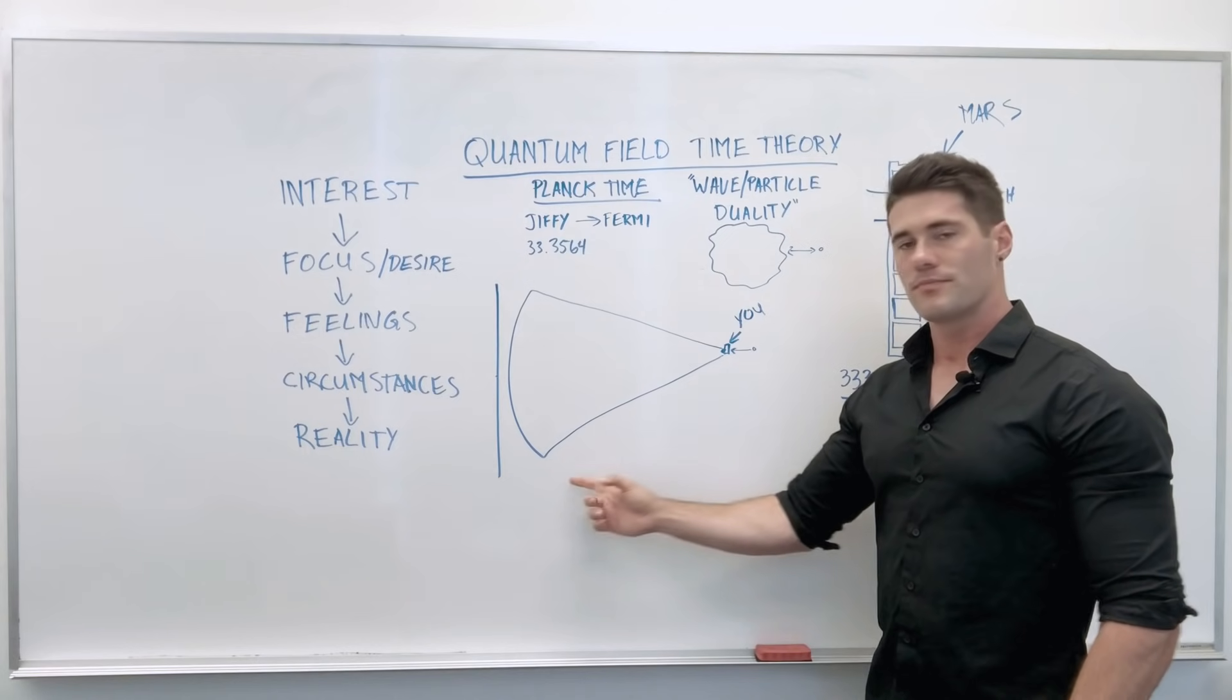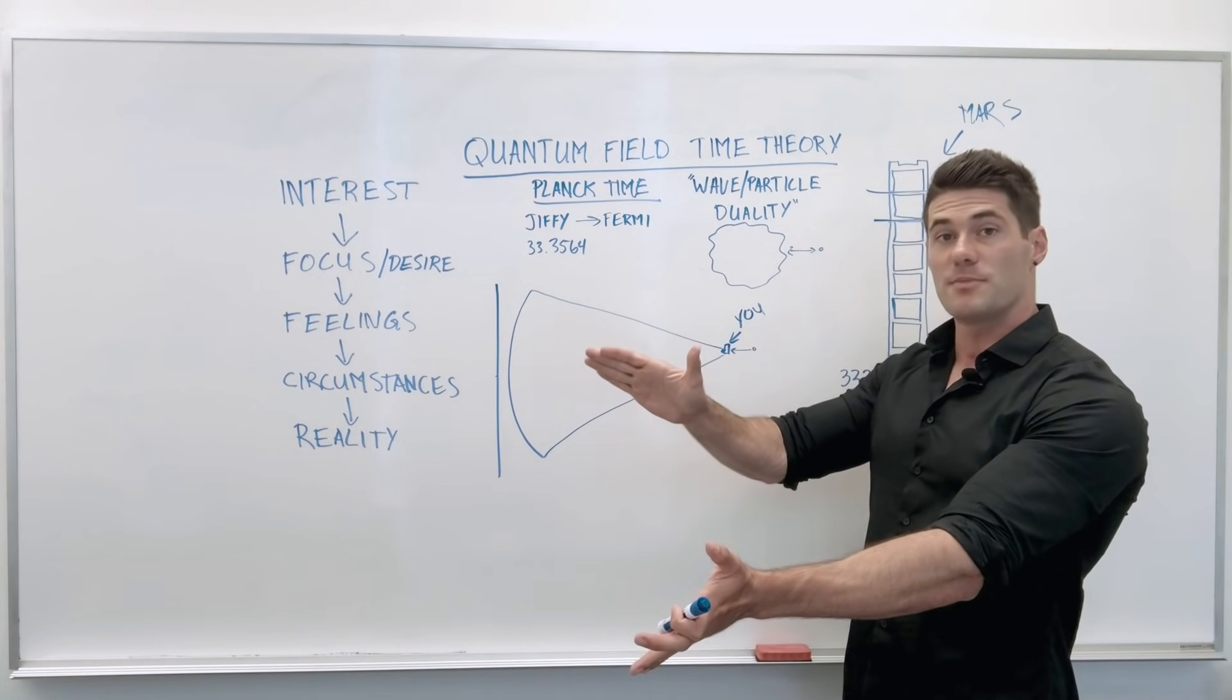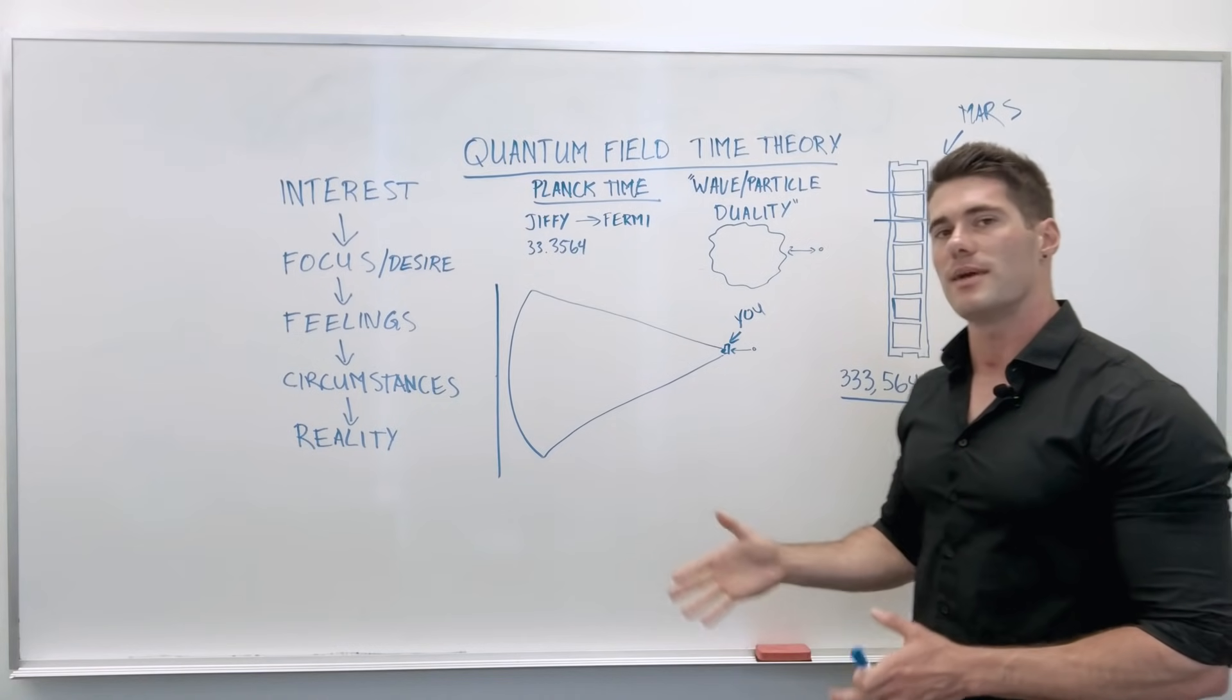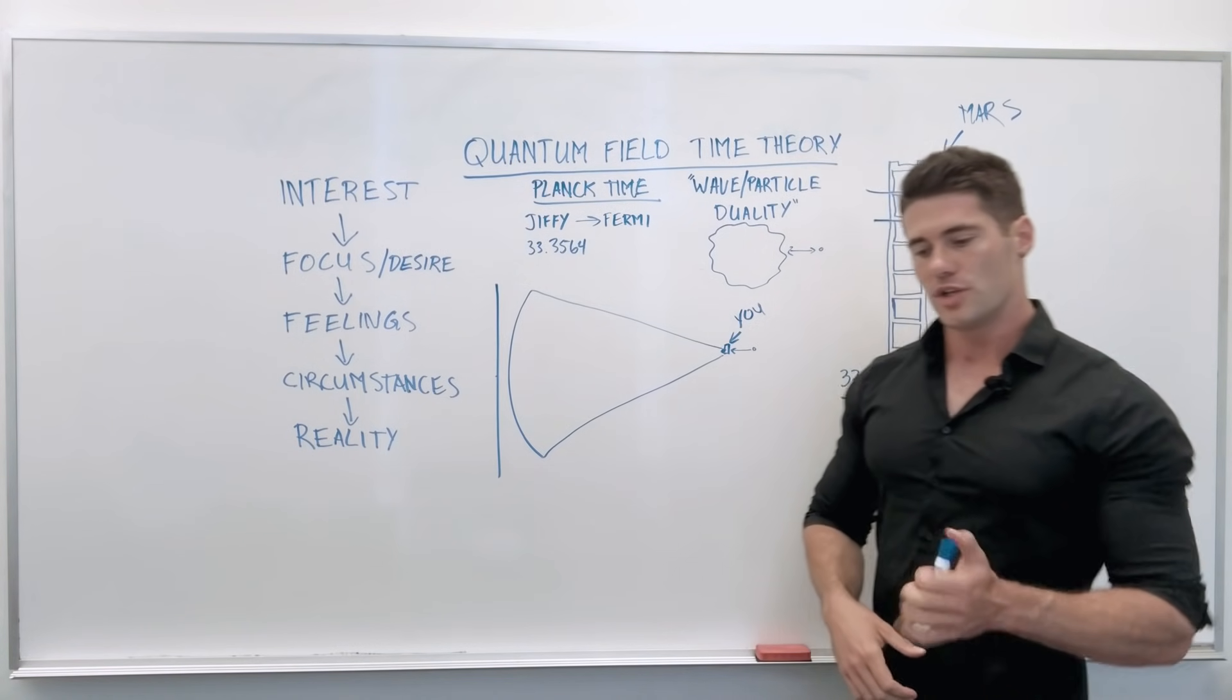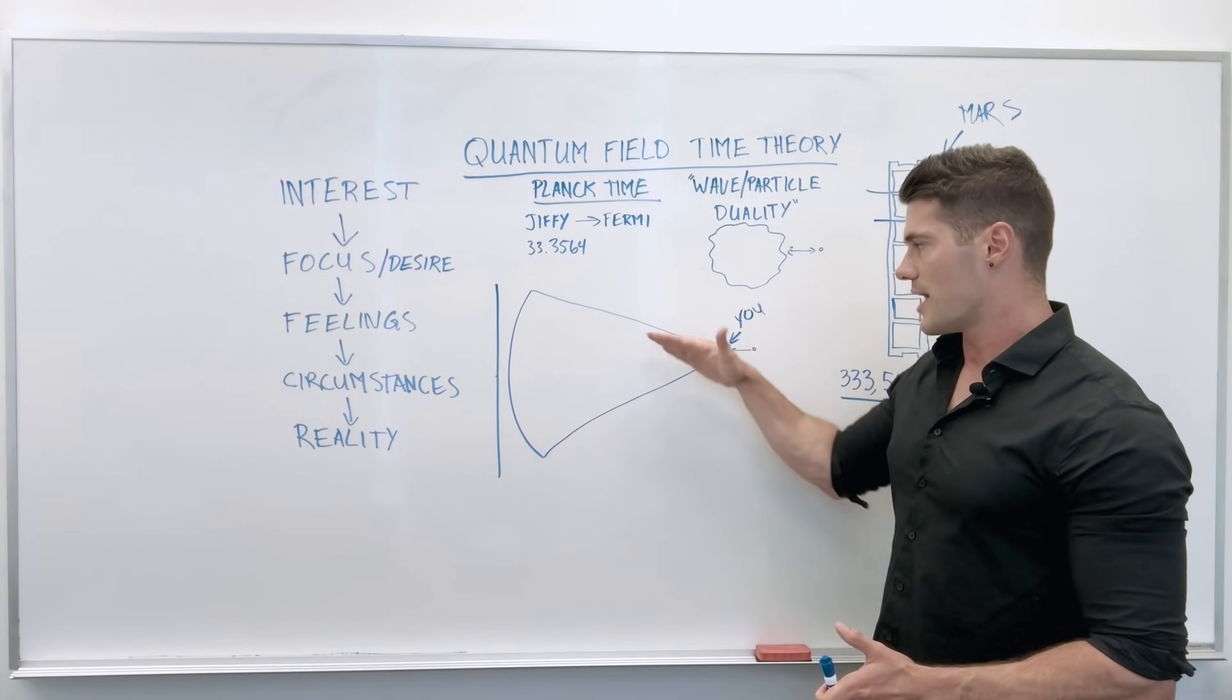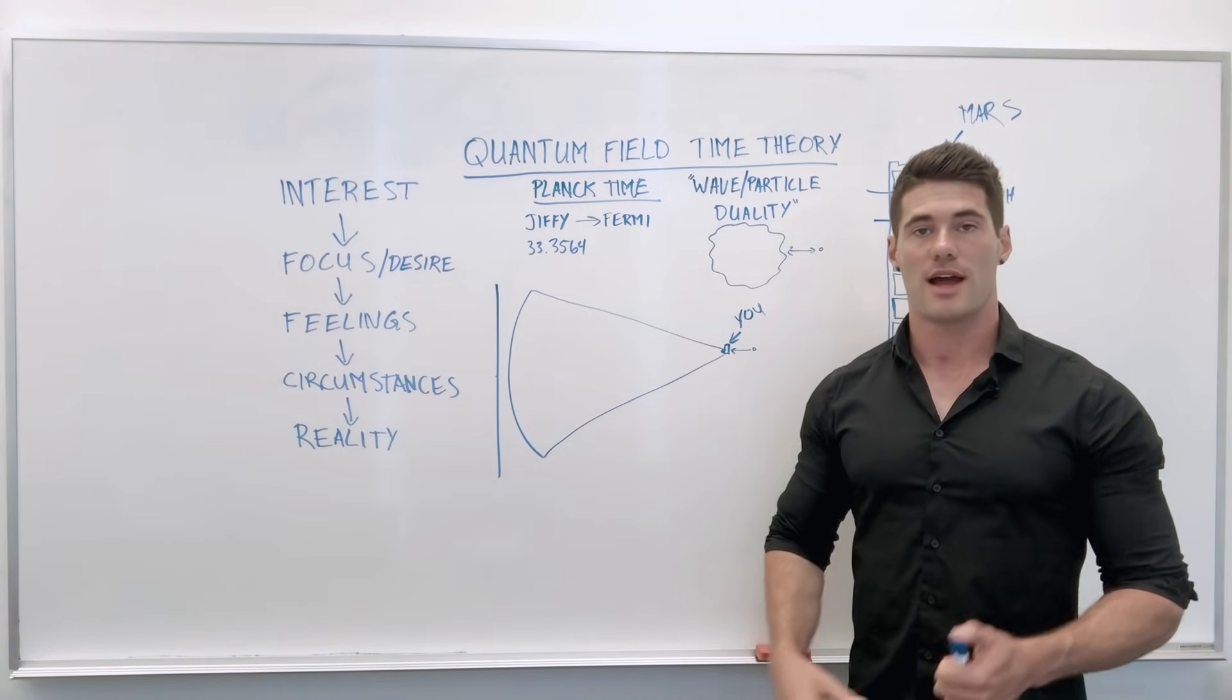But as time goes by, the field of possibility expands rapidly. Every nanosecond is another choice you can be making. You could go to the left, you could go to the right. Every time you make a decision, it travels you in a different direction in this probability field of your life.